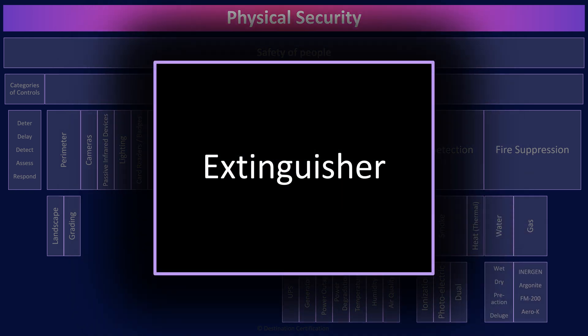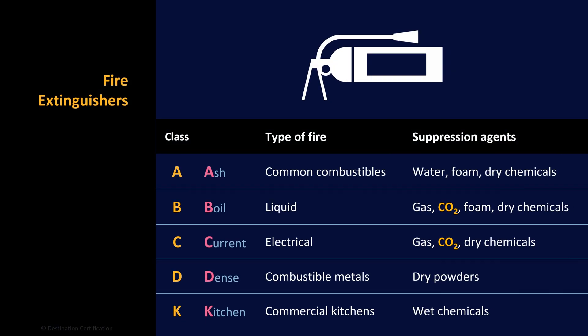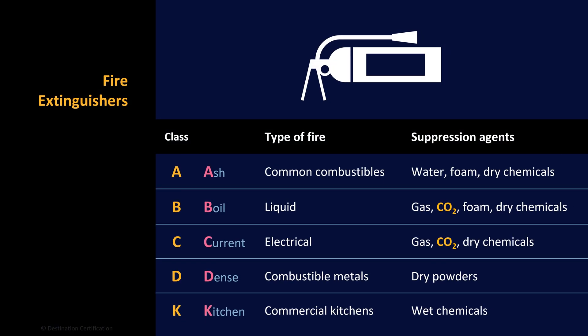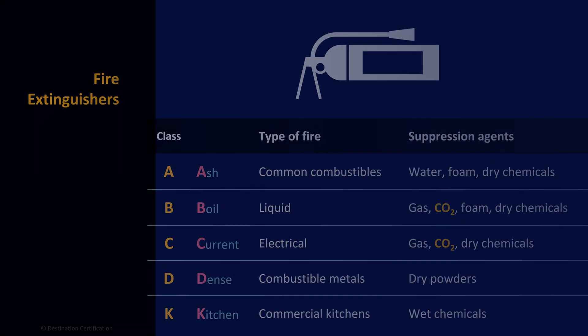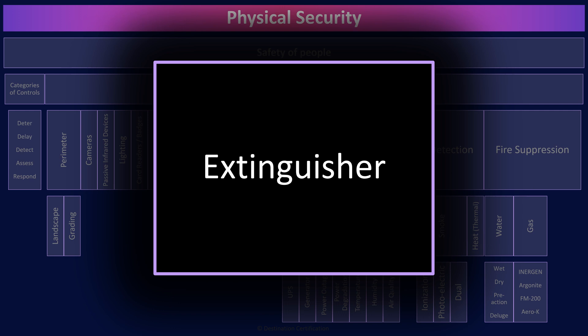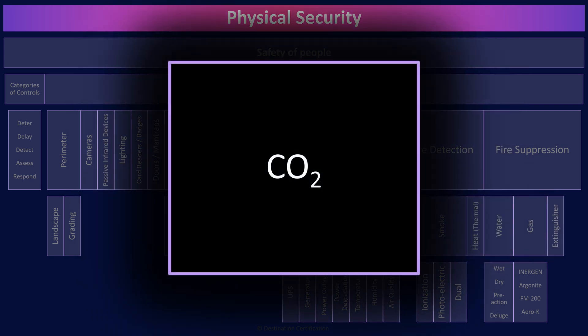The final tool in your fire suppression arsenal is fire extinguishers. There are five different classes of fire extinguisher: A, B, C, D, and K. Each class is meant to put out a different type of fire using different suppression agents. The one class to highlight is Class C — designed to put out electrical fires, the type you might have in a data center. Class C extinguishers often use CO2, carbon dioxide, as the suppression agent. CO2 is an excellent choice for data centers because it is non-corrosive, won't damage expensive equipment, doesn't leave a residue, doesn't conduct electricity, and provided you don't use too much, it's safe for humans.